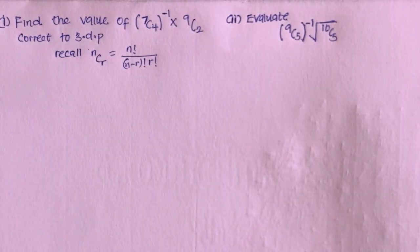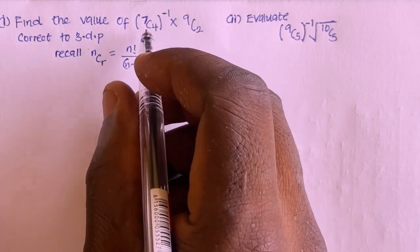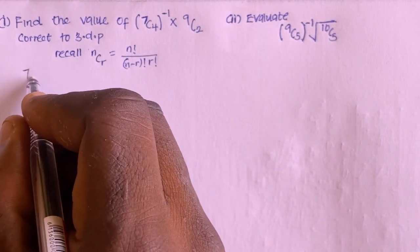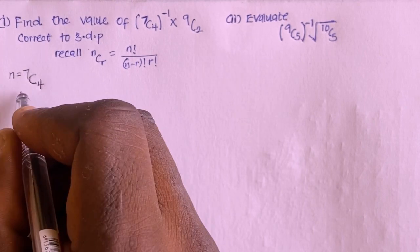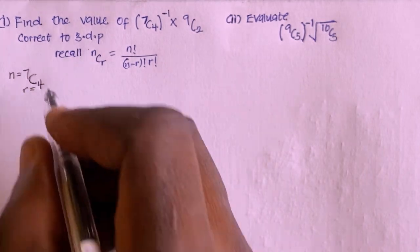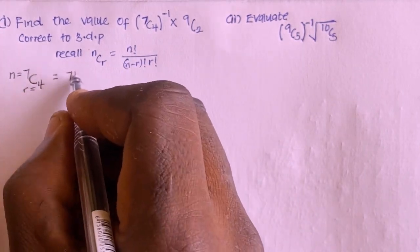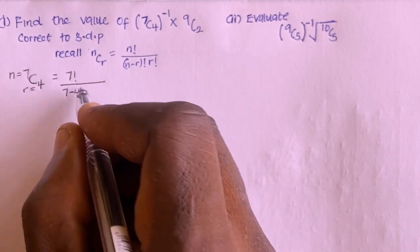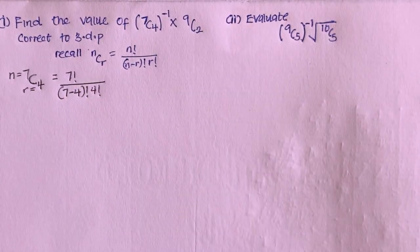From the first question, I need to find the value of 7 combination 4. Here our n is 7 and our r is 4. So this is 7 factorial divided by (7 minus 4) factorial times 4 factorial.